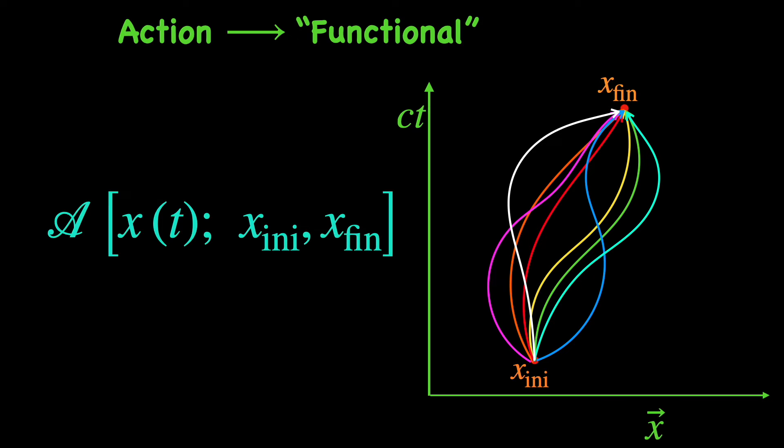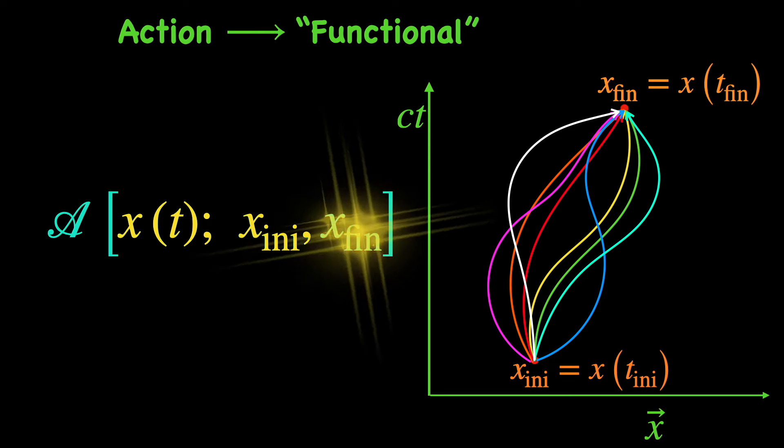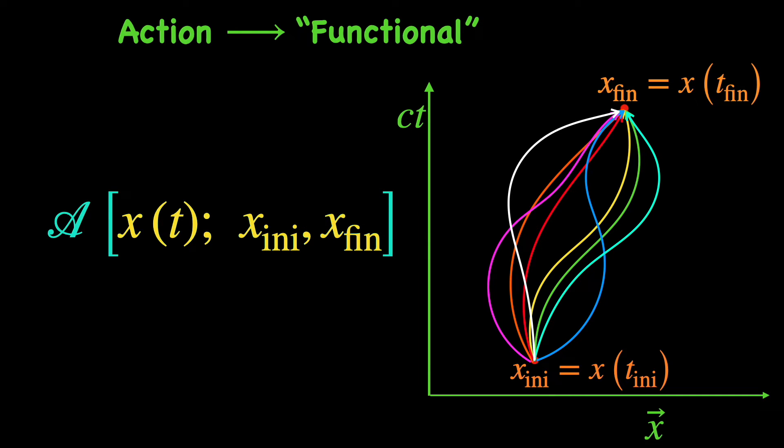By the way, the initial event point x_initial is nothing but the position coordinate we get when we punch in the initial time instant t_initial in the trajectory function x(t). Similarly, x_final is x(t) at t equal to t_final. Given these three things, the trajectory x(t) and the two terminal event points x_initial and x_final, the action functional generates a number. This number is referred to as a value of the action for the given trajectory function and for those two terminal event points.